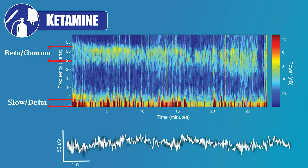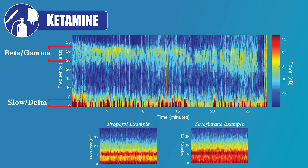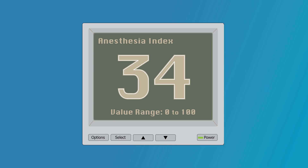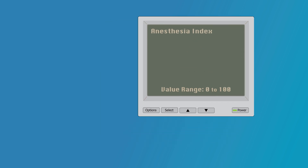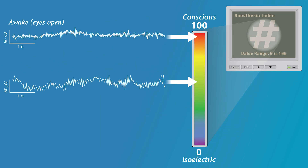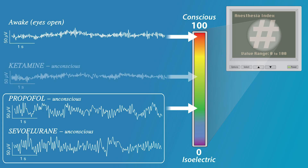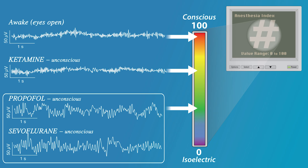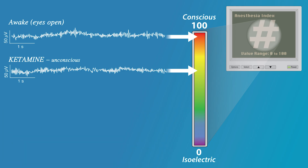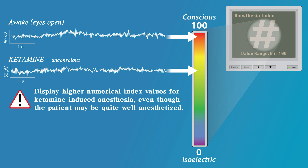A slow delta oscillation is also present in the EEG during low-dose ketamine delivery. However, compared to propofol and inhaled ether-derived anesthetics, this slow delta oscillation is less regular in appearance. Processed EEG-based depth-of-anesthesia indices tend to have problems when ketamine is administered. These indices tend to associate low-frequency EEG patterns with a more unconscious state. While this is true for drugs like propofol and sevoflurane, it is not true for ketamine. By the nature of how ketamine affects the brain, it produces high-frequency EEG activity when it is working to alter consciousness. The processed EEG depth-of-anesthesia monitors do not differentiate between drugs, so they tend to observe this 30 hertz activity and display higher numerical index values for ketamine-induced anesthesia, even though the patient may be quite well anesthetized.